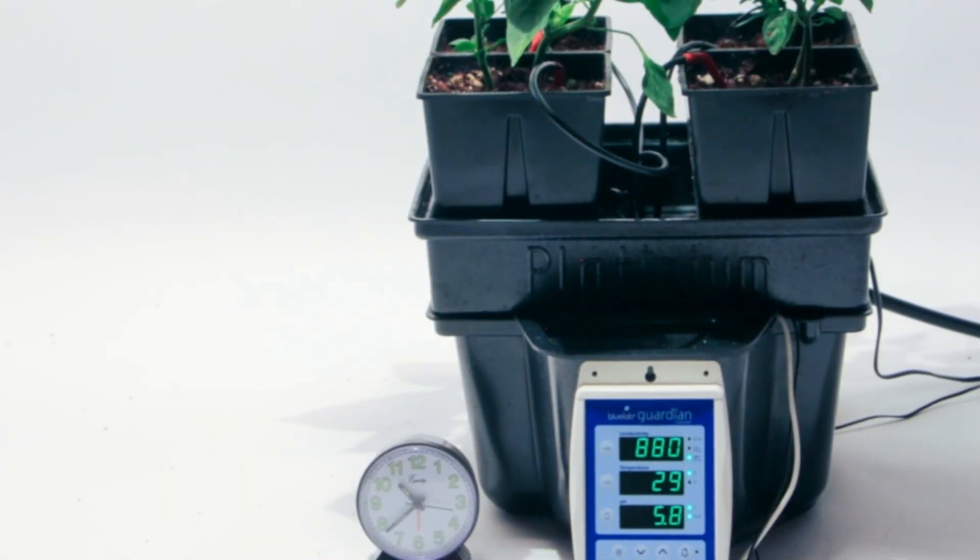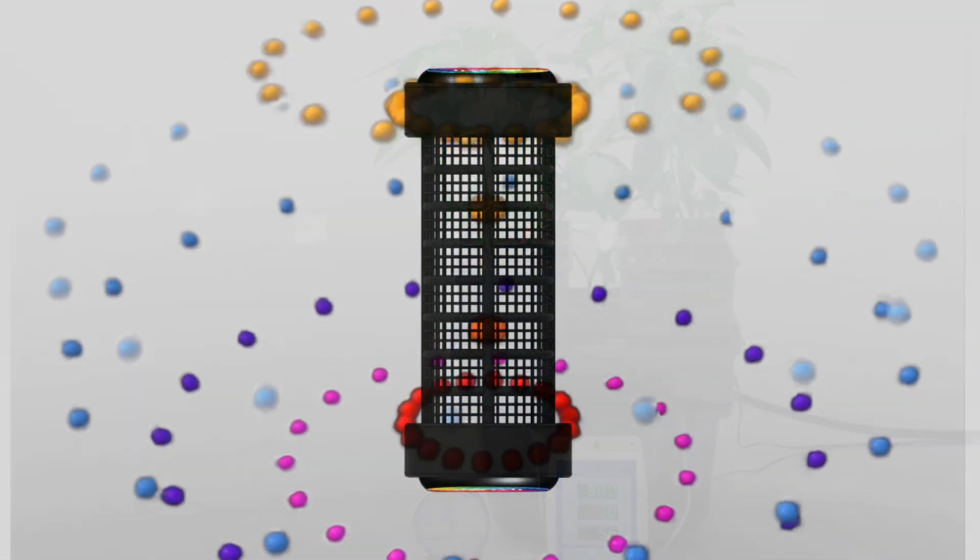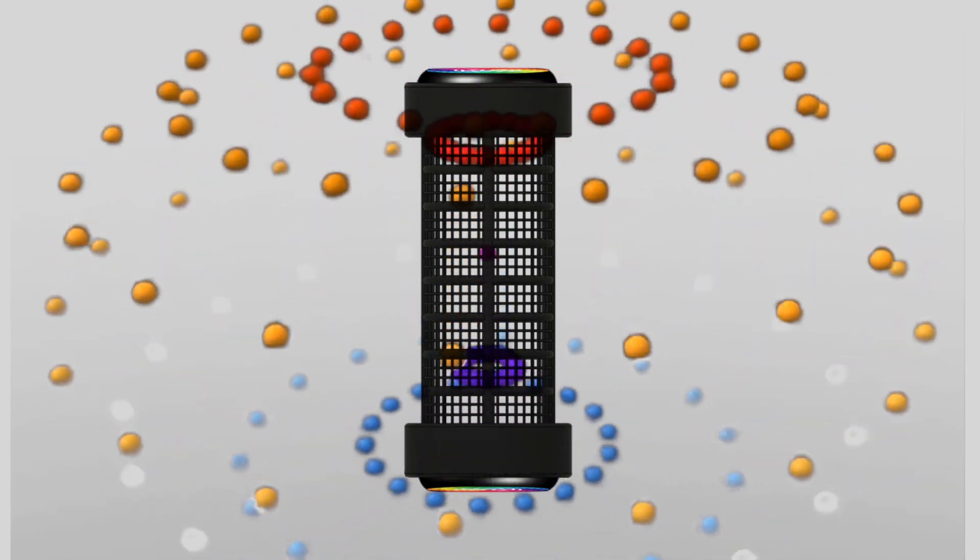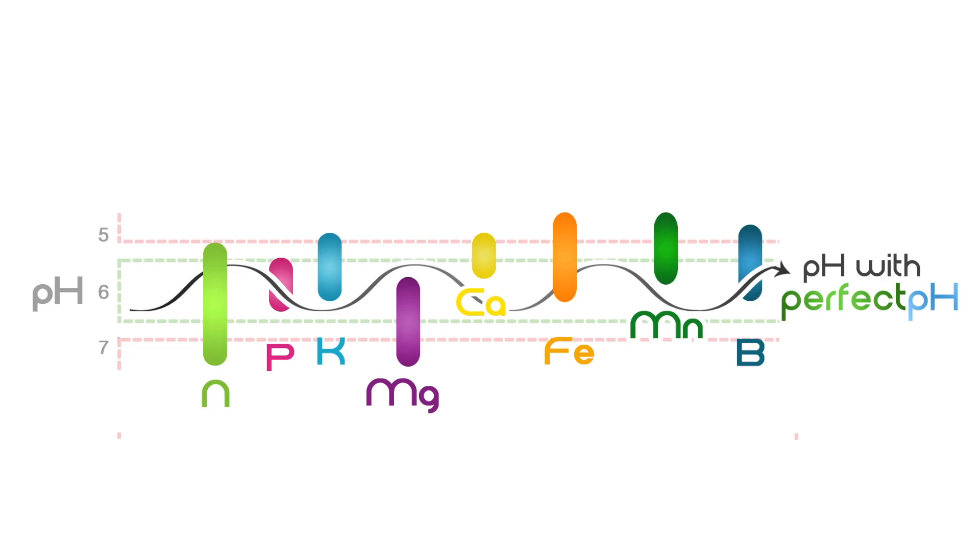In this setup using a drip system with jalapeno plants, the pH stayed between 5.7 and 6.2. By fixing the ion imbalances that cause pH problems, the Perfect pH is also creating an overall healthier reservoir environment, making nutrient use more efficient and reducing the frequency of necessary reservoir changes.